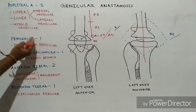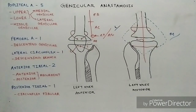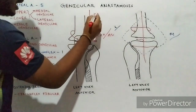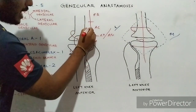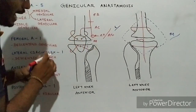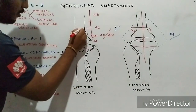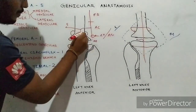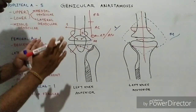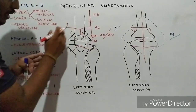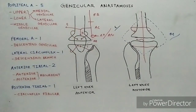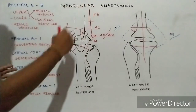Next is the branch from the femoral artery — the descending genicular branch. The descending genicular branch is given off from the femoral artery when it lies in the adductor canal. It comes directly down and divides into two branches: a superficial branch and a deep branch. The superficial branch goes along with the saphenous nerve, while the deep branch comes down and contributes to the anastomosis in front of the patella.